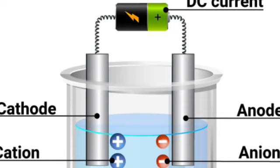Activity 8: Take carbon rods from two discarded cells. Clean the metal caps with sandpaper. Wrap copper wires around the caps and connect them to a battery and switch. Both carbon rods are called electrodes — iron nails (6 cm long) can also be used. Take about 250 ml of water in a glass beaker and add a few drops of dilute sulfuric acid to make it more conductive. Immerse the electrodes in the solution with caps remaining outside.